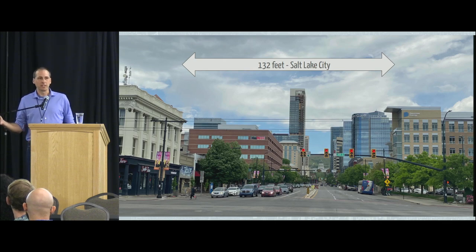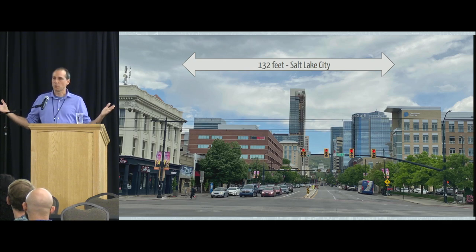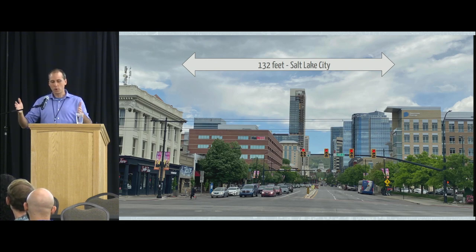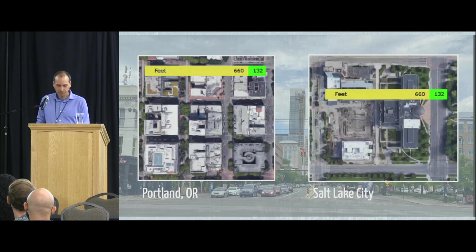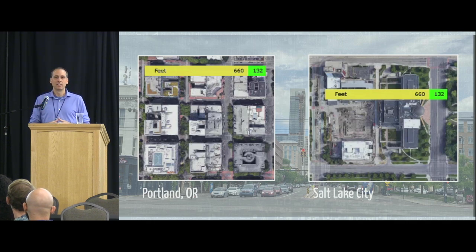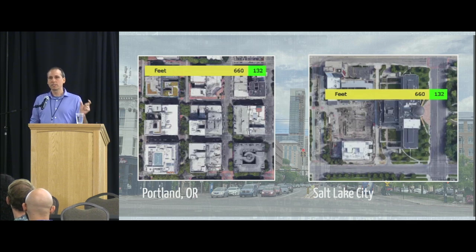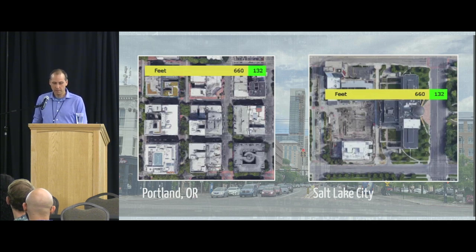The other thing you're going to notice, and you'll hear from folks coming in for the first time, is: what's up with the wide streets? They're precisely 132 feet wide, which is very wide. This is State Street, a six-lane corridor heading downtown. The blocks are also very large — 660 feet wide, the length of two football fields. Maggie experienced that trying to walk a few blocks and realizing these are big blocks. By comparison, Portland's blocks are 200 by 200 feet and road widths there are about 40 to 50 feet wide.